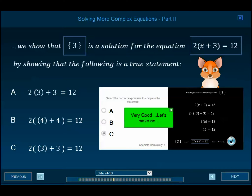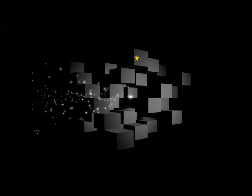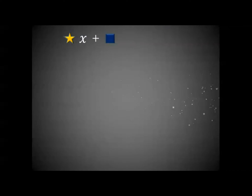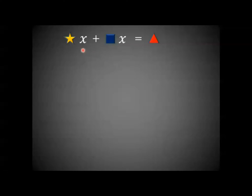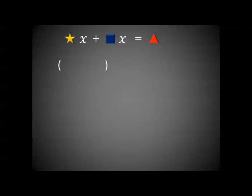Very good. We show that 3 is a solution for the equation. Let's look at another pattern. Say we have star times x plus square times x is equal to a triangle expression. It is standard practice when you have like terms in solving equations to combine them together into a single term, which nearly always makes it easier to get x all alone. So we rewrite the left-hand side as star plus square times x.